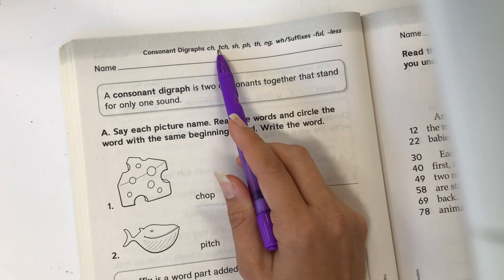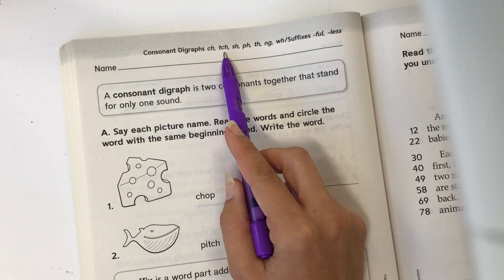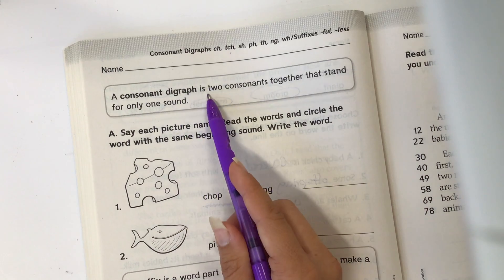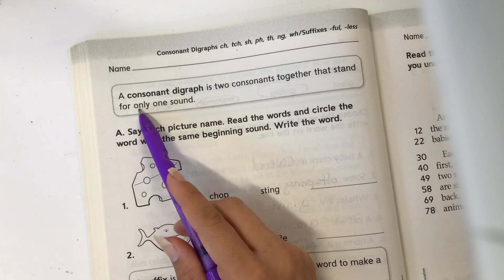Digraphs are when two sounds are together, or maybe three, and they make a single sound like ch. The consonant digraph is two consonants together that stand for only one sound.